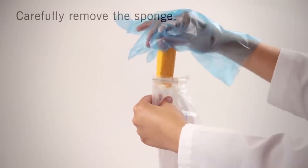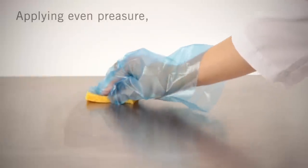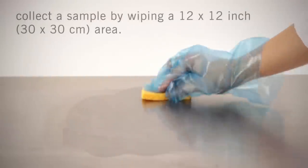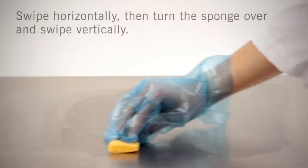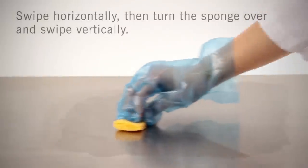Carefully remove the sponge. Applying firm pressure, collect the sample by swiping a 12 by 12 inch area. Swipe the entire area of interest horizontally, then turn the sponge over and swipe the same area vertically.